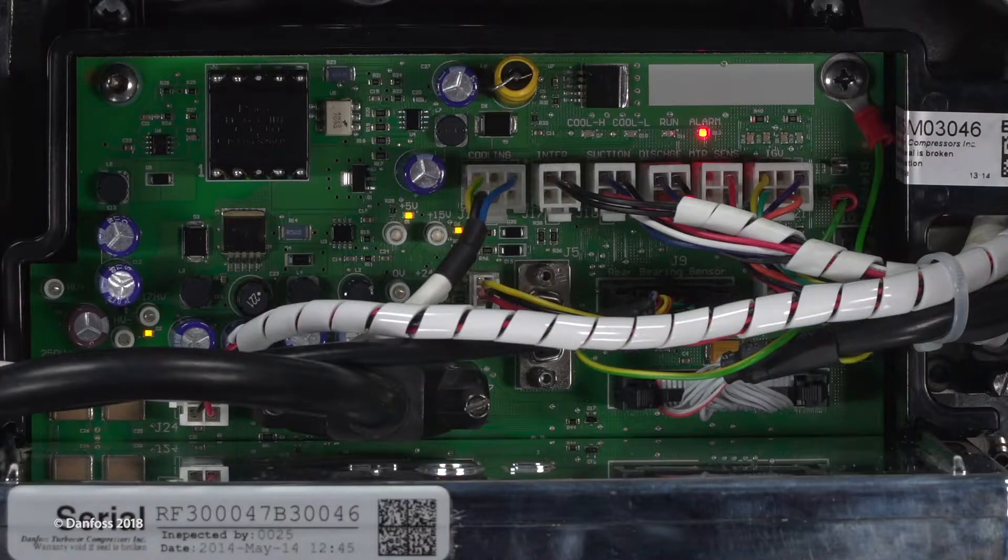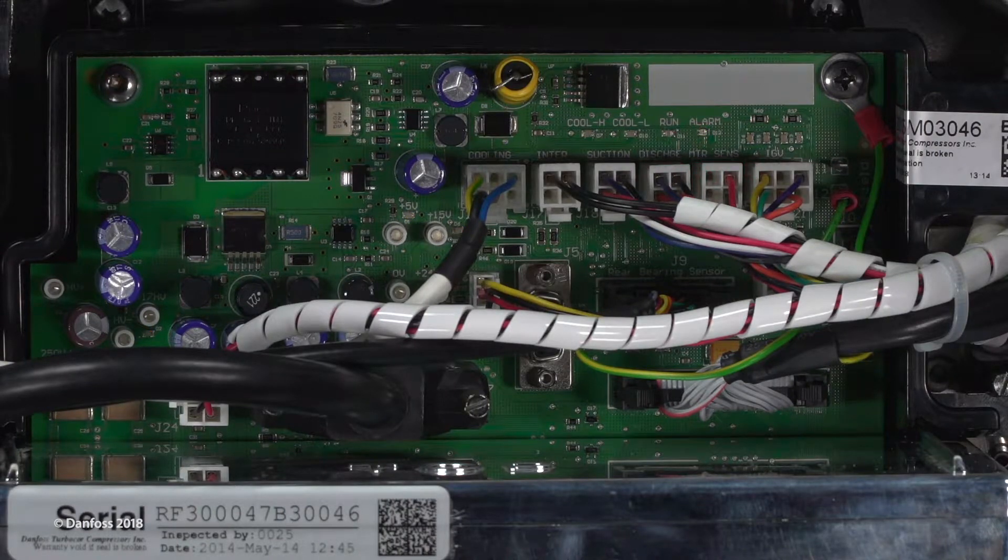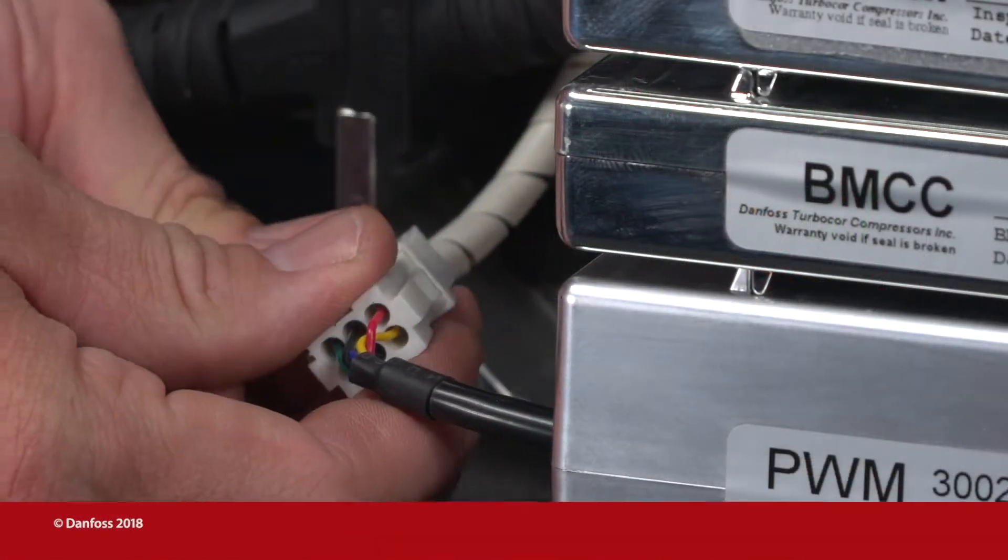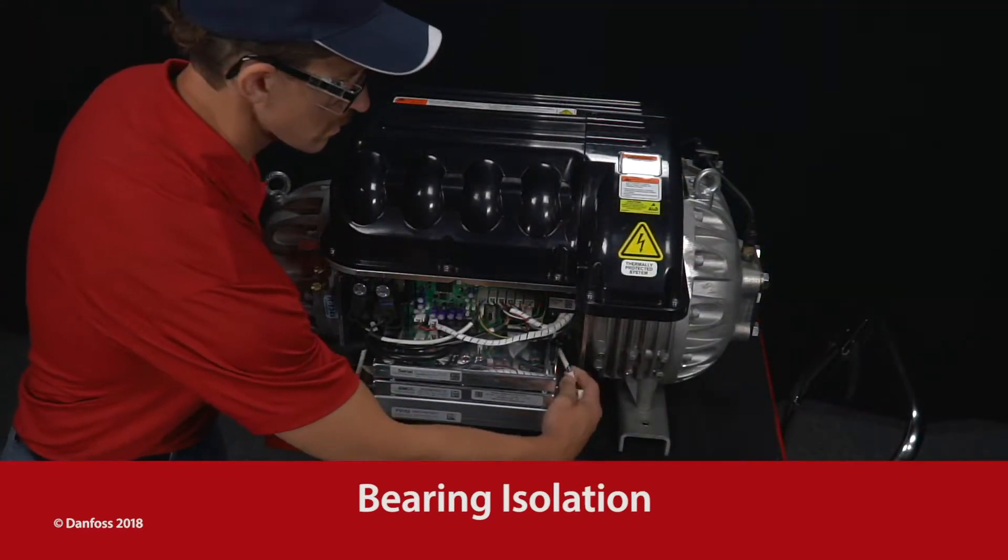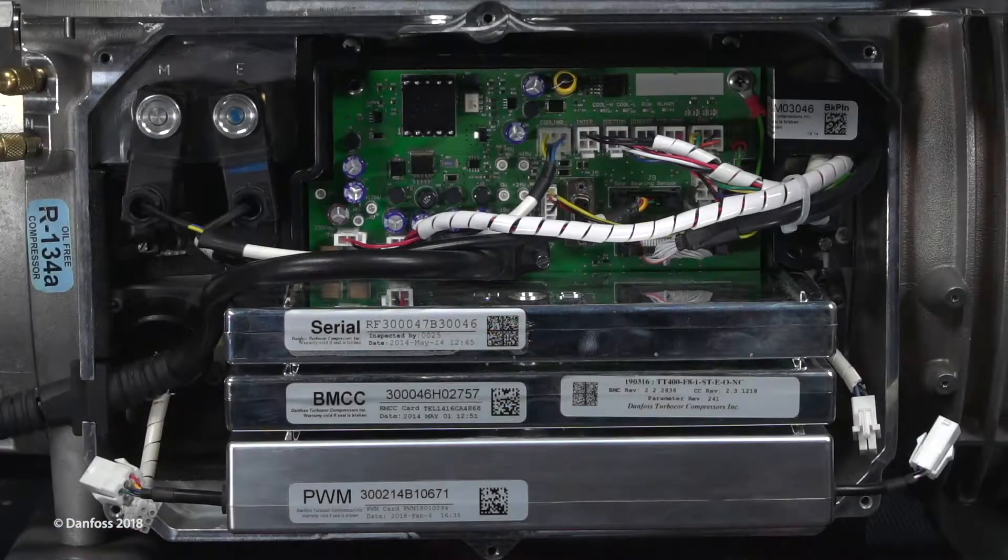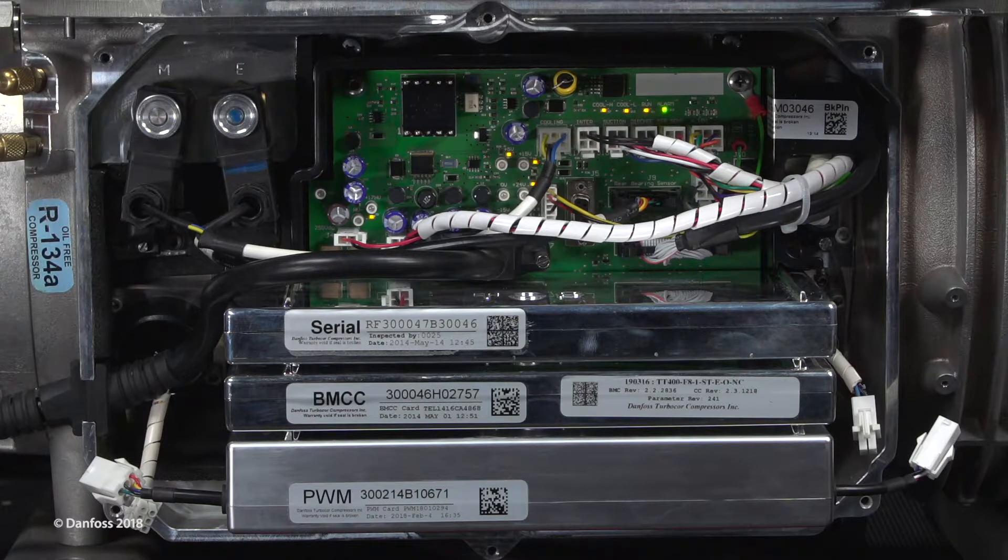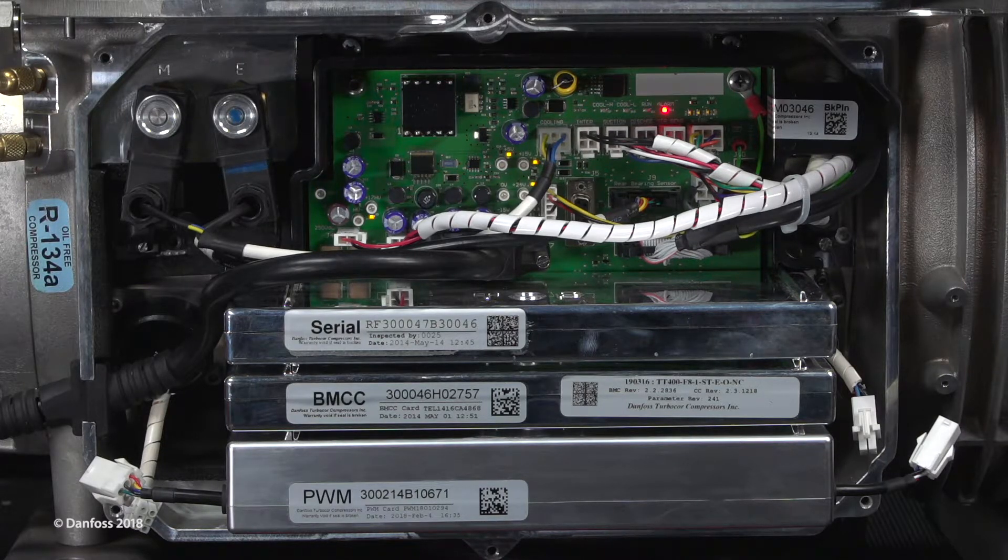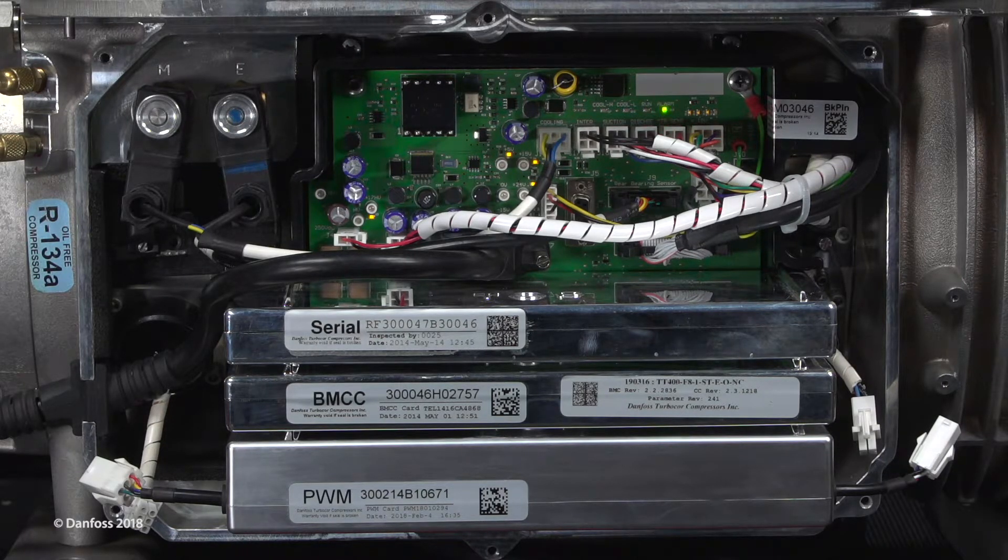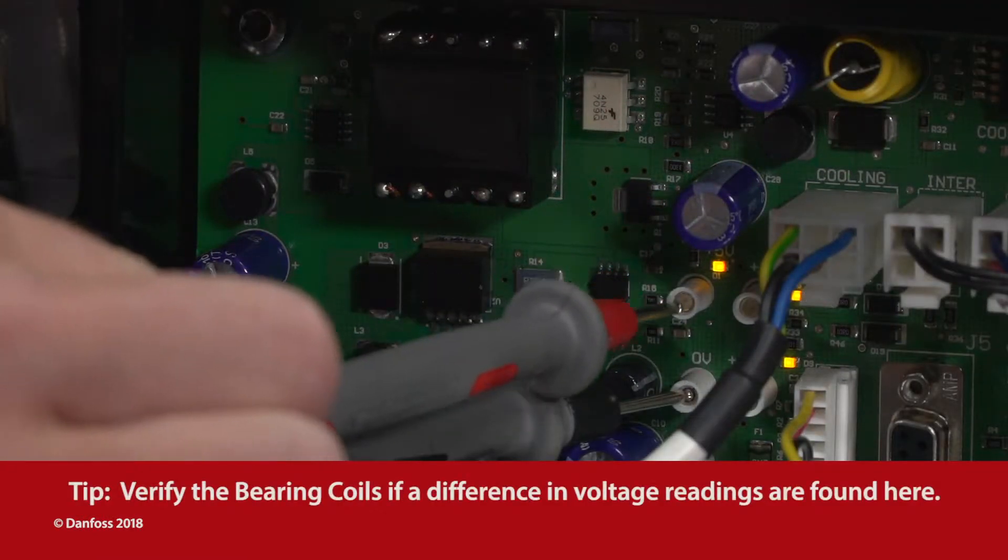Wait for the LEDs on the backplane to turn off. Disconnect the PWM output cables from the bearing feed-throughs. Reapply power to the compressor and wait approximately one minute for the compressor to complete the startup sequence. You may then verify the voltage test points on the backplane again.